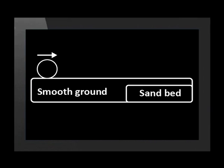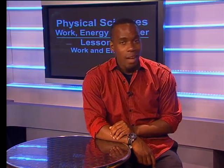What about negative work? Consider a ball rolling on a smooth level surface for a few meters and then onto a sand bed. The ball slows down on the sand bed — the work done by the sand bed on the ball is negative work. This negative work reduces the velocity of the moving object and its kinetic energy.